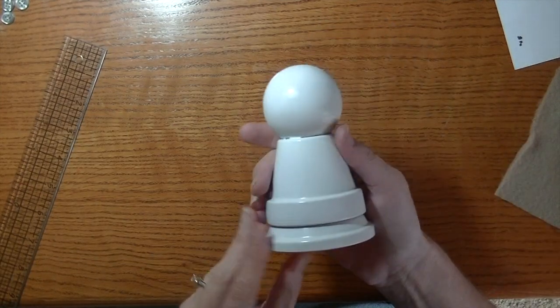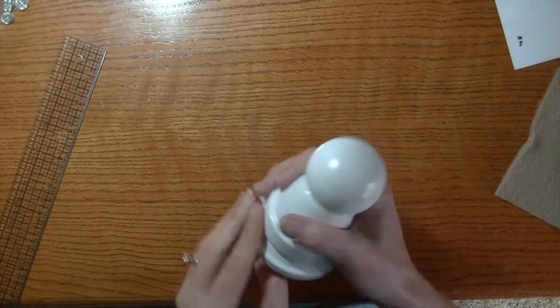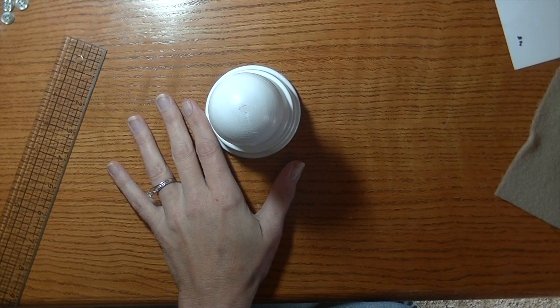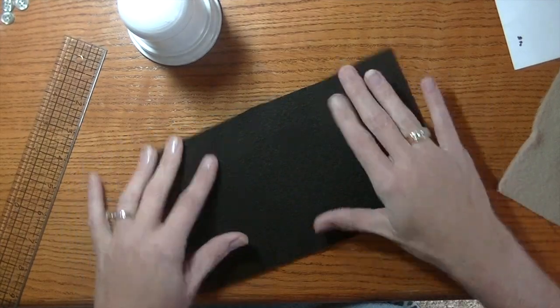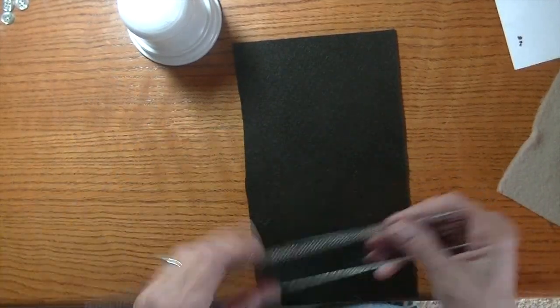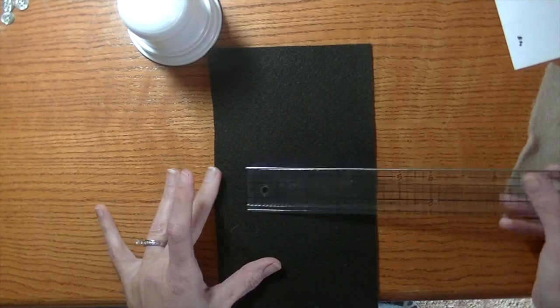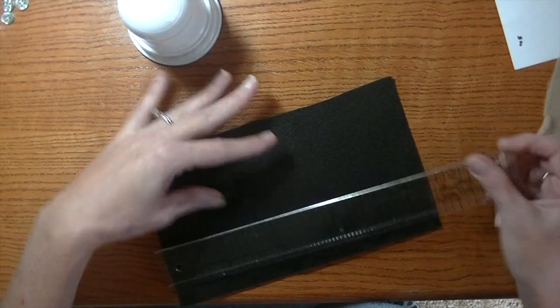Hey guys, we are back. Our snowman piece is dried. Now what we're going to do is we're going to go ahead and make his hat, and I have a piece of felt, just regular black felt. I think this is about 5 inches wide by 9.